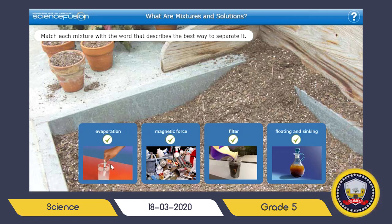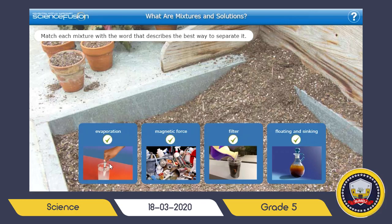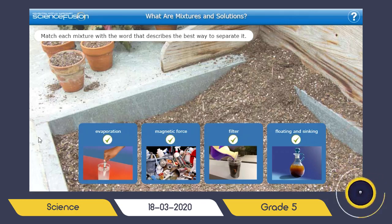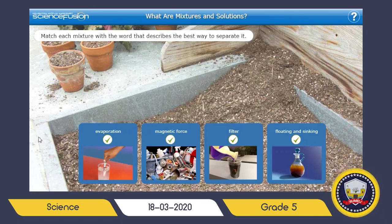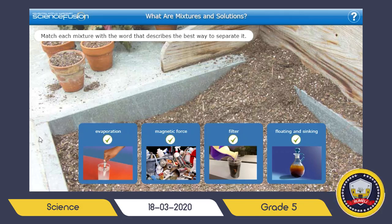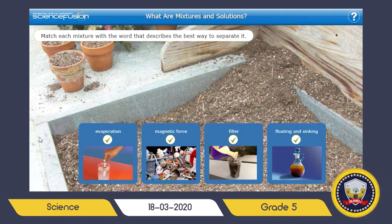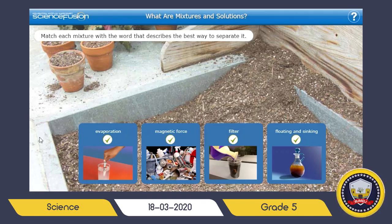So mixtures can be separated using floating and sinking, filtering, magnetic force, or evaporation — or using other properties like shape, color, and state that we discussed. Because materials have different properties, the best way to separate one mixture is not always the best way to separate a different mixture. Don't forget: each mixture will need a different method of separation.